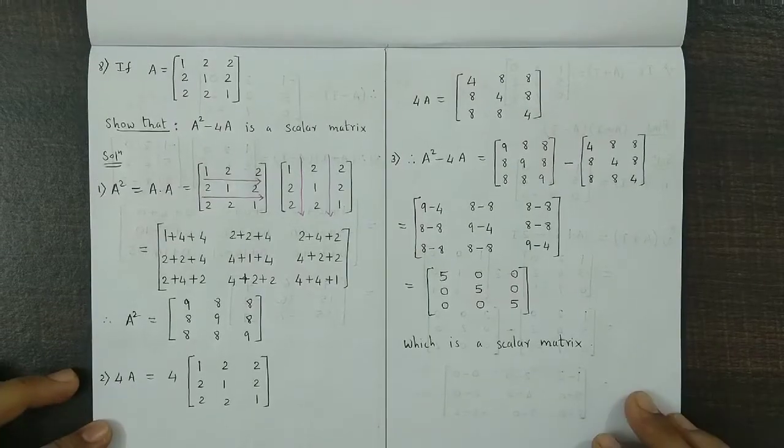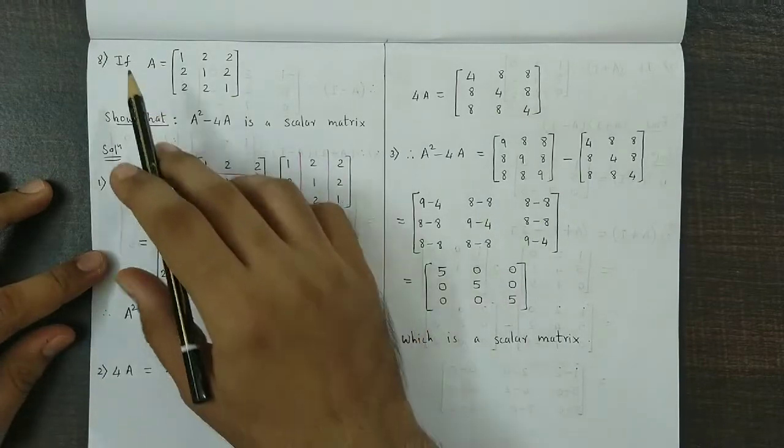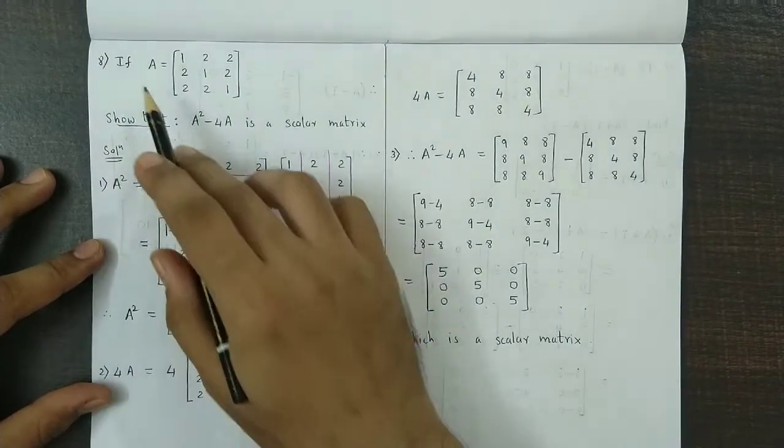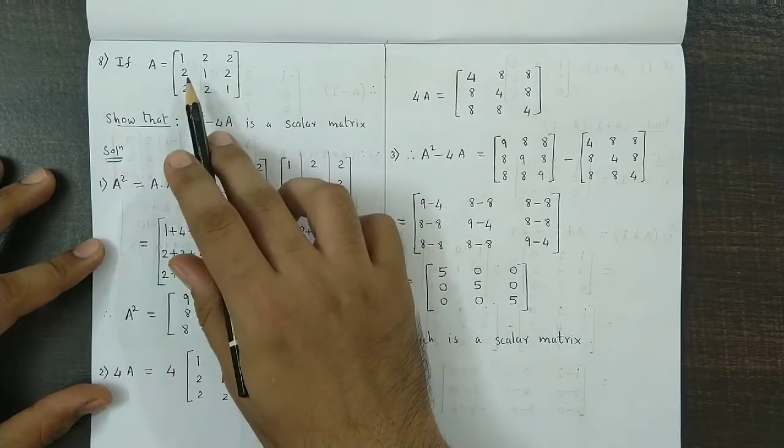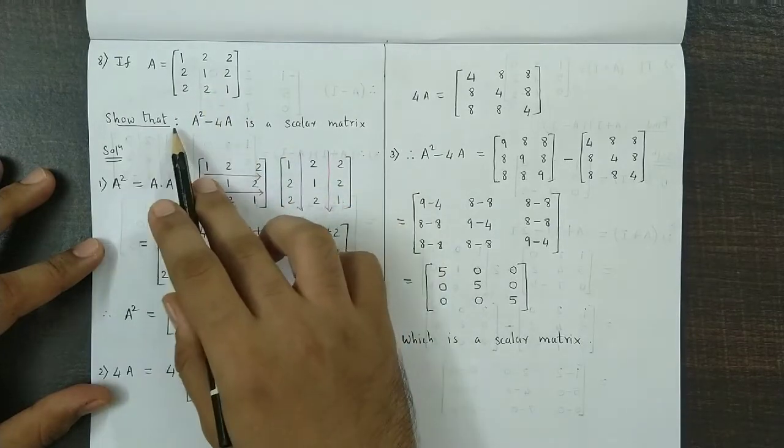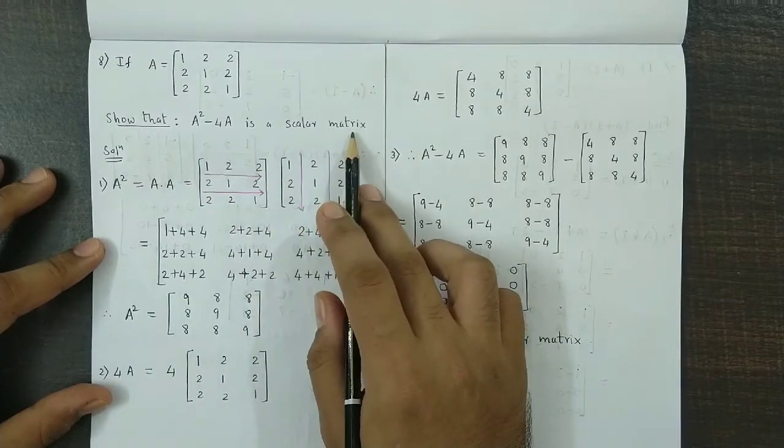Hello and welcome back. We now discuss one very important question from Exercise 2.3, that is question number 8. We have been given matrix A with elements 1, 2, 2, 2, 1, 2, 2, 2, 1. We have to show that A square minus 4A is a scalar matrix.